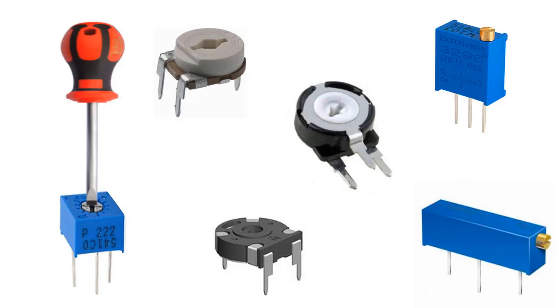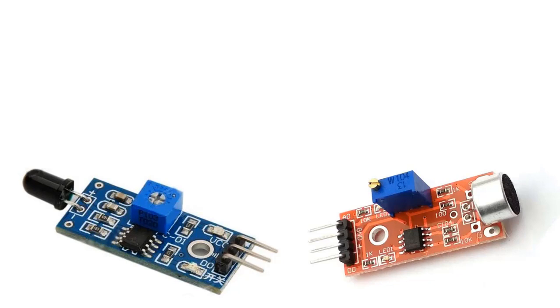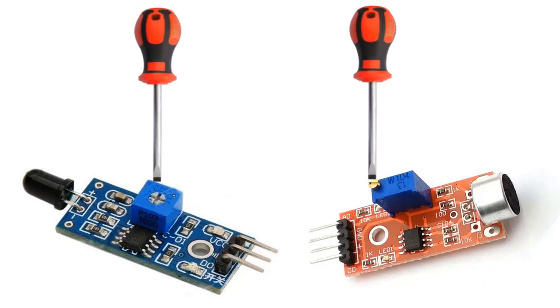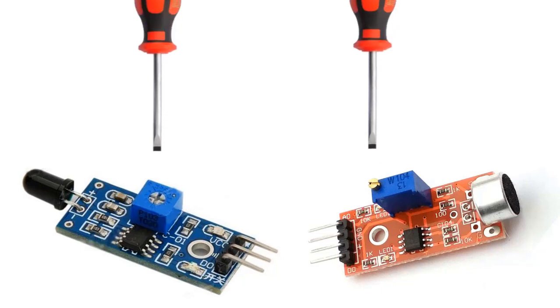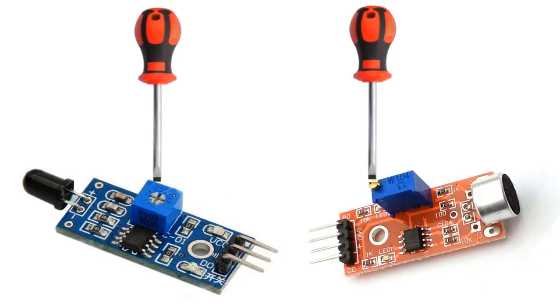For example, here we see that there are Trimpet on the sensors used with the Arduino microcontroller. We adjust the resistance value of the Trimpet with the help of a screwdriver to reach the precision value we need and it remains at the value we adjust. Then, we don't often change the Trimpet adjustment.